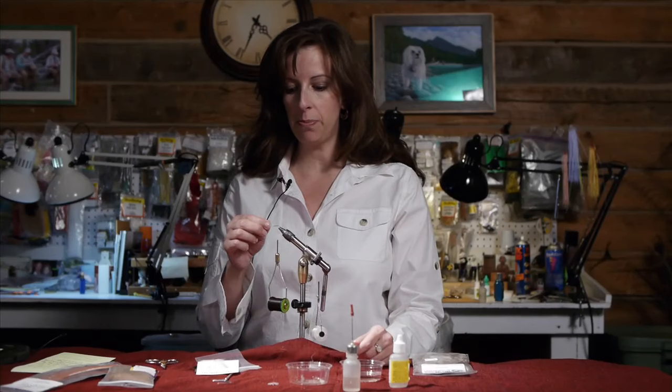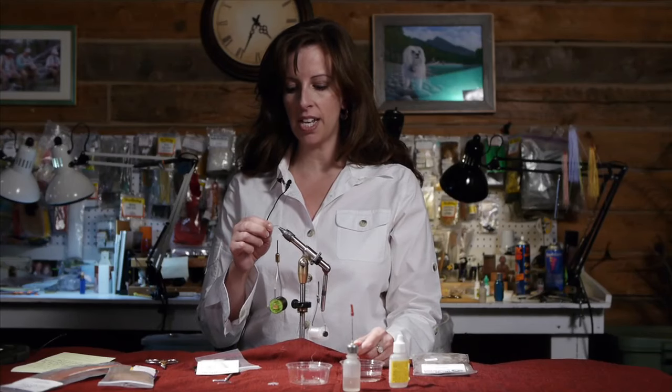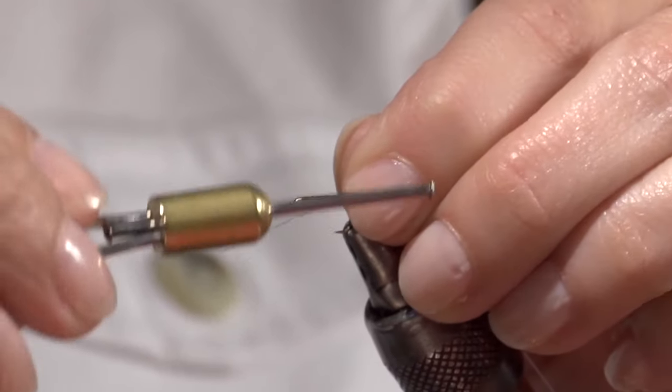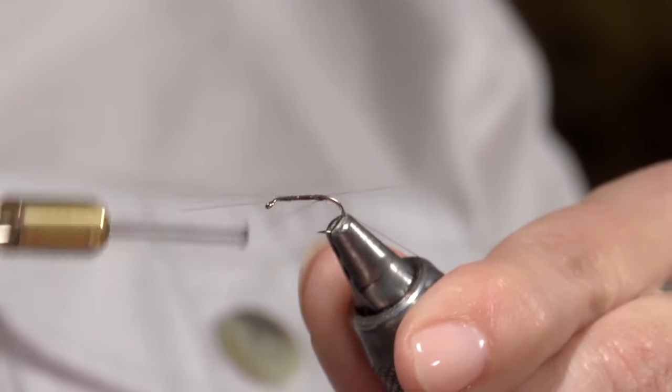And you want the tail to be about the same size as the hook shank. Tie it in at the hook point.